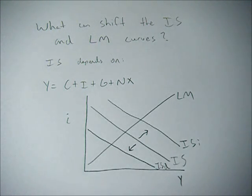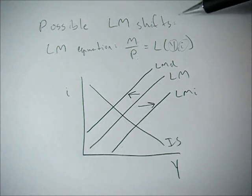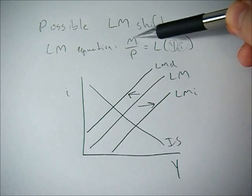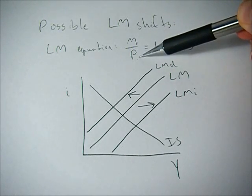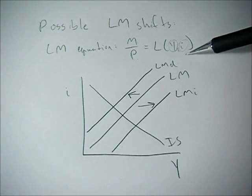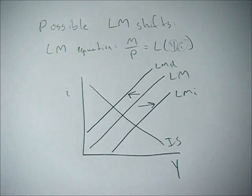Next, we'll look at possible shifts in the LM curve. Possible shifts in the LM curve will occur due to changes in our LM equation. So here we see money supply over the price level, equal to liquidity preference for money or money demand, which depends on GDP and the interest rate.